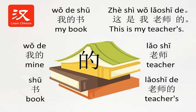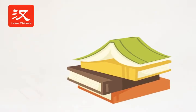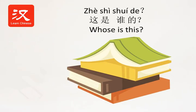这是我的书，你的呢？在这儿。给，这是你的书。谢谢。So, how do I say 'whose is this' in Chinese? 这是谁的 — whose is this?